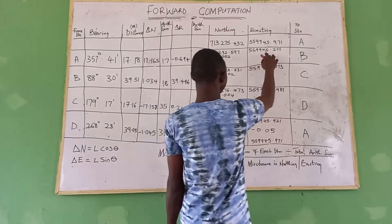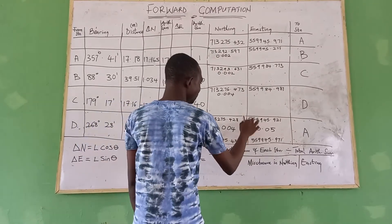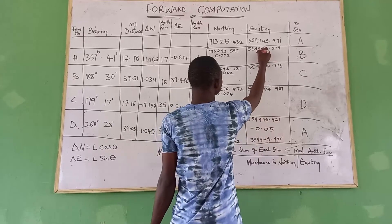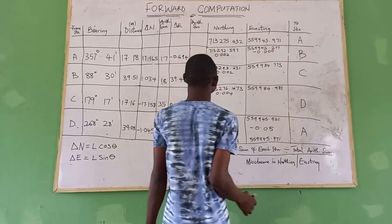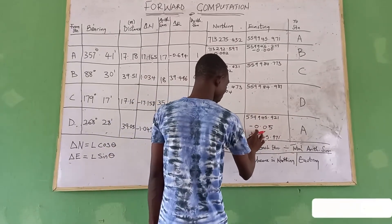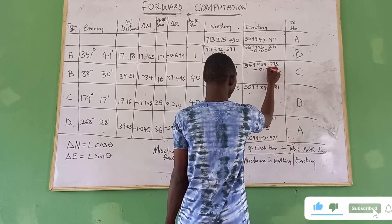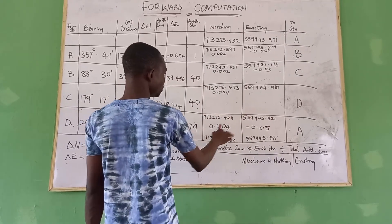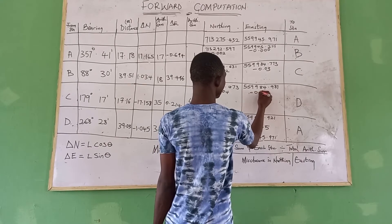Same thing for easting. 1 ÷ 79 × (−0.05) = minus 0.00. 40 ÷ 79 × (−0.05) = minus 0.030. 40 ÷ 79 × (−0.05) = minus 0.030.